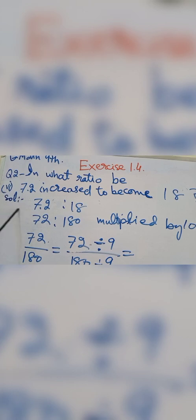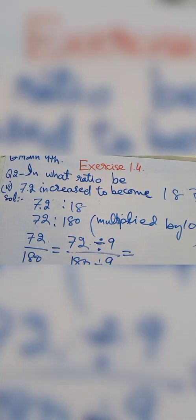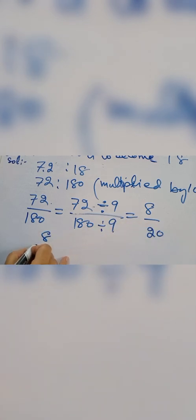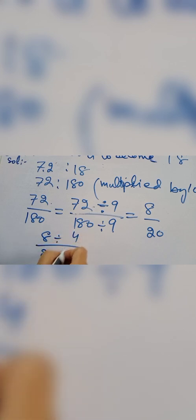Last part of question number 2: 7.2 increased to become 18. We write 7.2 ratio 18, multiplied by 10 with both numbers. We have 72 and 180; 72 over 180. We divide 9 with both numbers and get 8 over 20. Again we divide 8 and 20 by 4, we get 2 over 5, and that gives us 2 ratio 5. That is our answer.